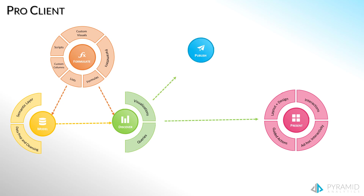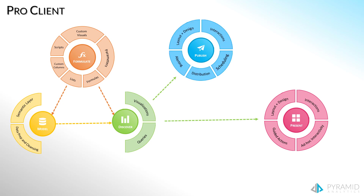Publish lets users design publication templates to render static reports, filling the enterprise reporting function typically demanded in organizations. Like Present, Publish lets users layout and design content with comprehensive graphical tools and capabilities, reusing existing queries and visualizations. The outputs from Publish are static rendered documents like PDF, PowerPoint, Excel, and Word, or data-driven alerts. As such, Publish includes all requisite tools like scheduling and distribution, which allows users to receive specific reports based on data-driven logic.